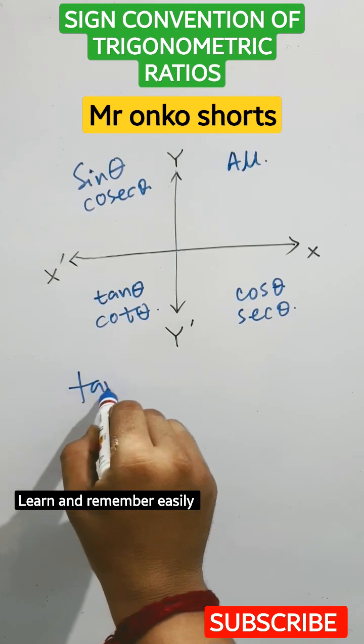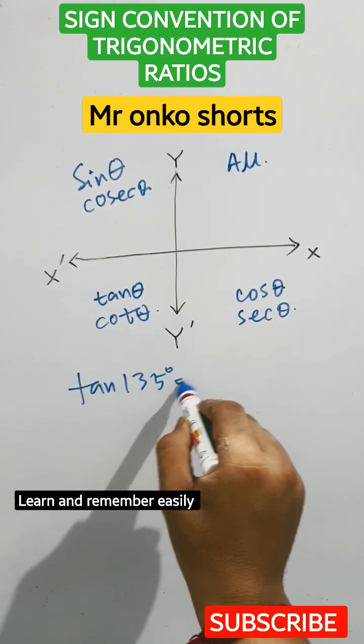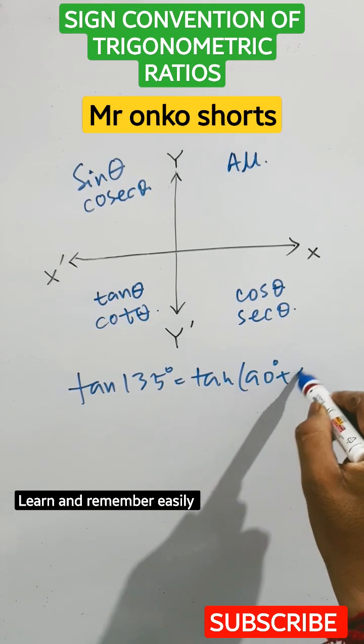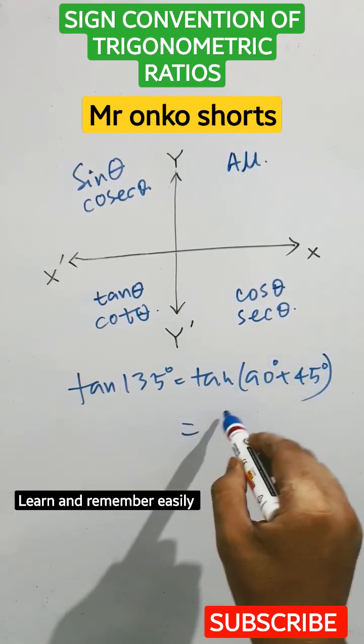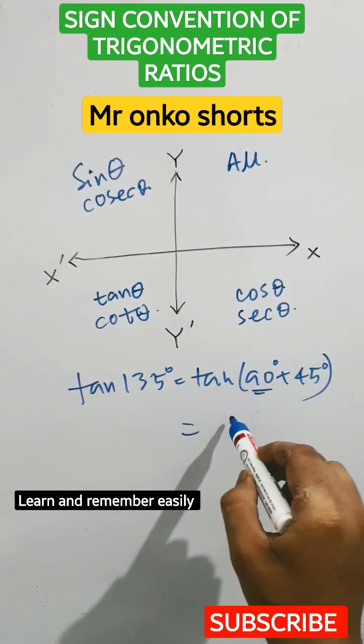Now, take an example that is tan of 135 degrees. That is equals to you can break it as 90 plus 45 degrees. So, it is odd multiple of 90.